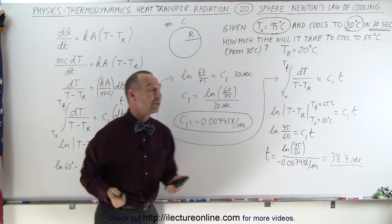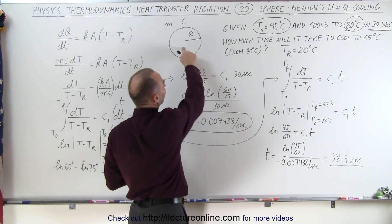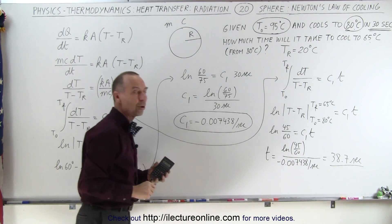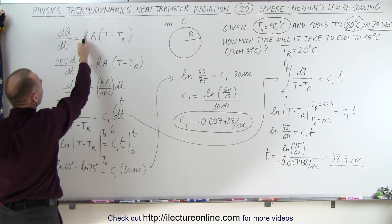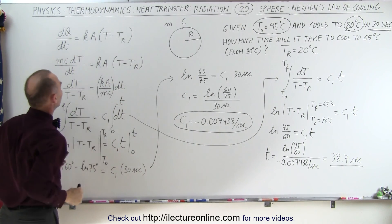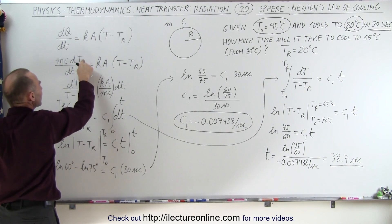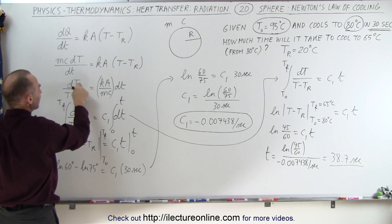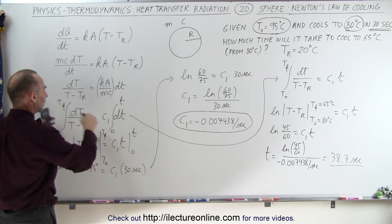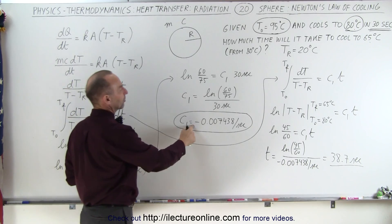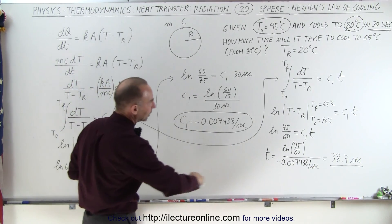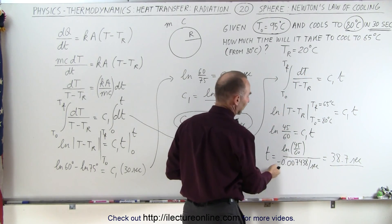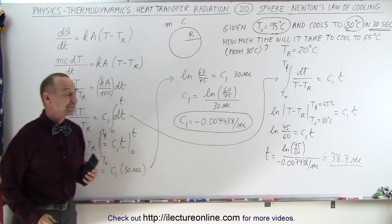Let's recap what we just did. We were given a sphere that cools from 95 degrees to 80 degrees in 30 seconds, and asked how much time it takes to cool from 80 down to 65 degrees. We used Newton's Law of Cooling, where heat exchange equals some constant times surface area times the temperature difference. We replaced dQ by mc dT, wrote dT over the temperature difference equals a constant times the time differential, integrated both sides to find the constant C1. Then we plugged that constant back into the same equation at the different temperatures — 80 degrees starting and 65 degrees finishing — to find the time to cool the next 15 degrees centigrade: 38.7 seconds. And that's how it's done.